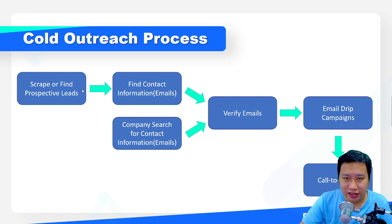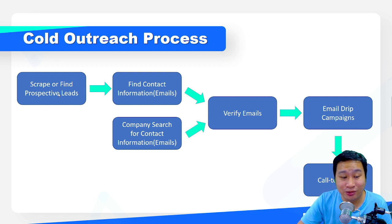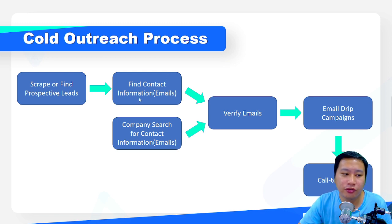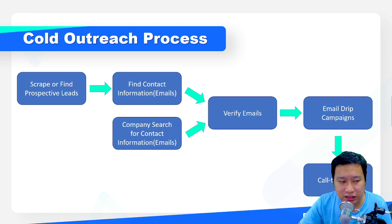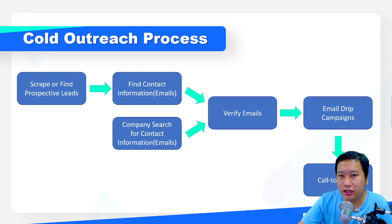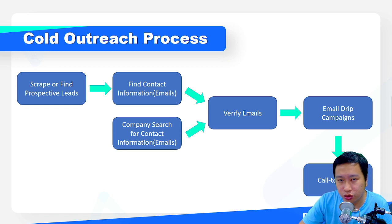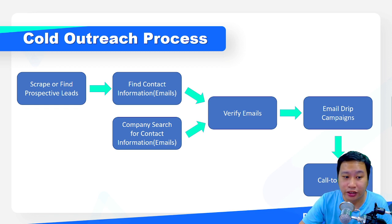What we are going to be using Textise for today is just to scrape and find prospective leads. You want to make sure that you have a different tool for finding contact information such as email or phone numbers. You can do that by using tools like Hunter, Snov, or Tomba, which is the one that I use.